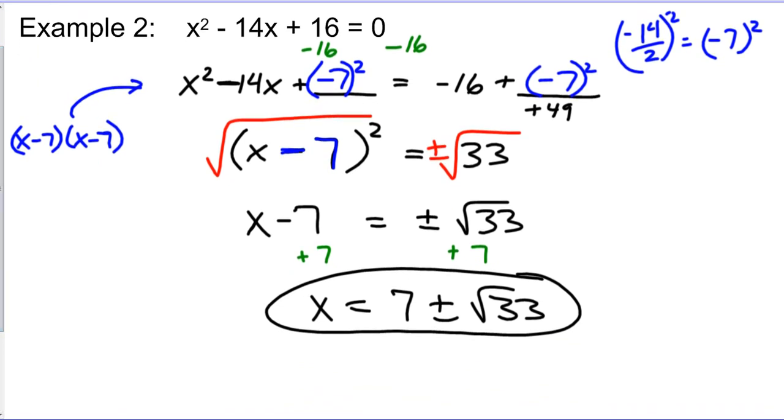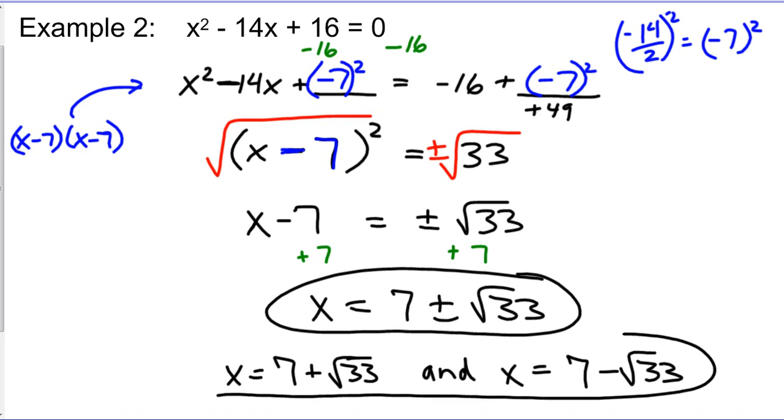Now, if your teacher says to give you the approximate answers, then by all means go ahead and type in your calculator, 7 plus radical 33, get a decimal, 7 minus radical 33, and get another decimal. If you want to write it twice, you can write it as x equals 7 plus radical 33, and x equals 7 minus radical 33. And that would be another way of expressing the same answer. Most people like to just keep it this way since we can express both of them by using the plus or minus, and it's a little bit shorter.